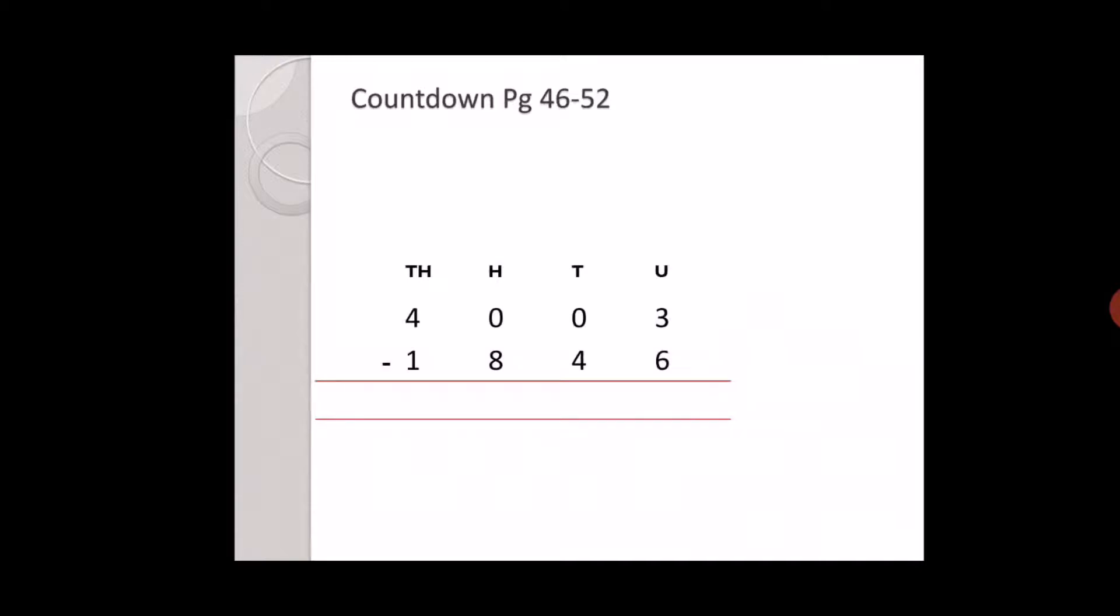Next question is three minus six. Can three be six minus? No. Now, tens place is also zero, hundreds place is also zero. What should we do? Yes, we need to borrow. Where do we borrow? Thousands place.